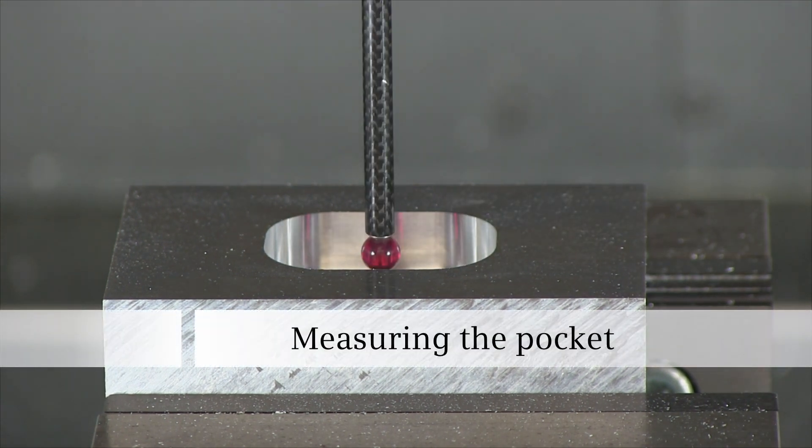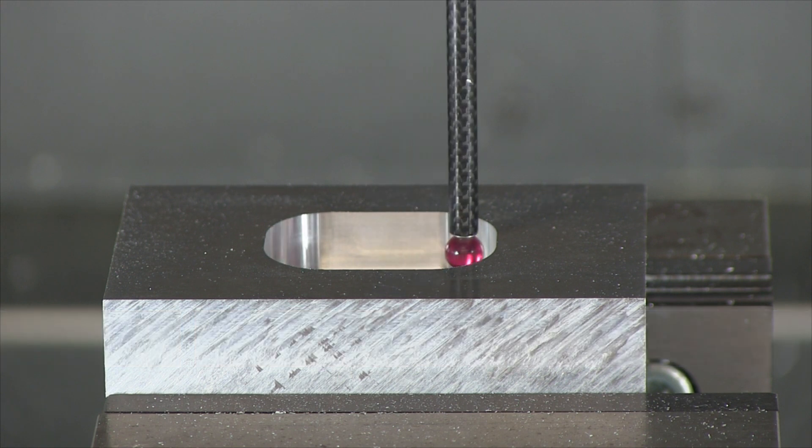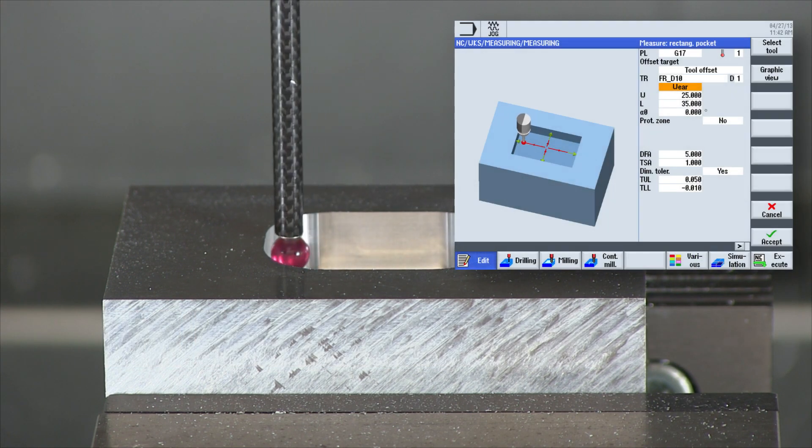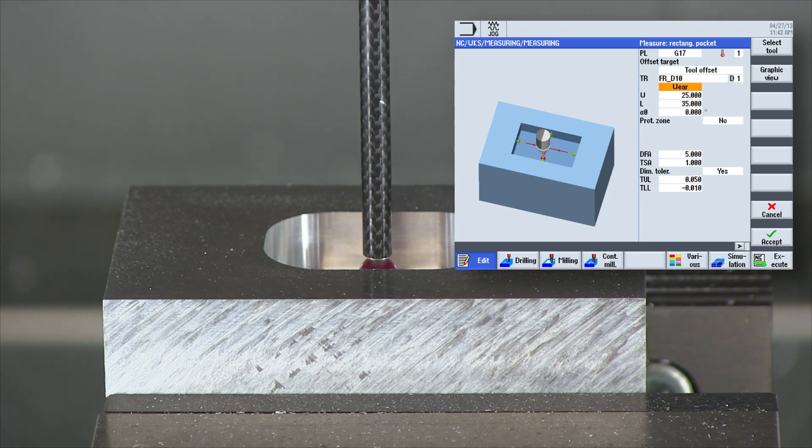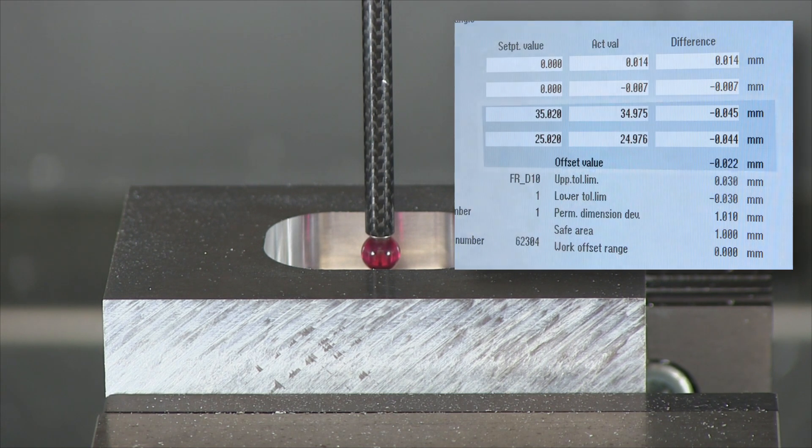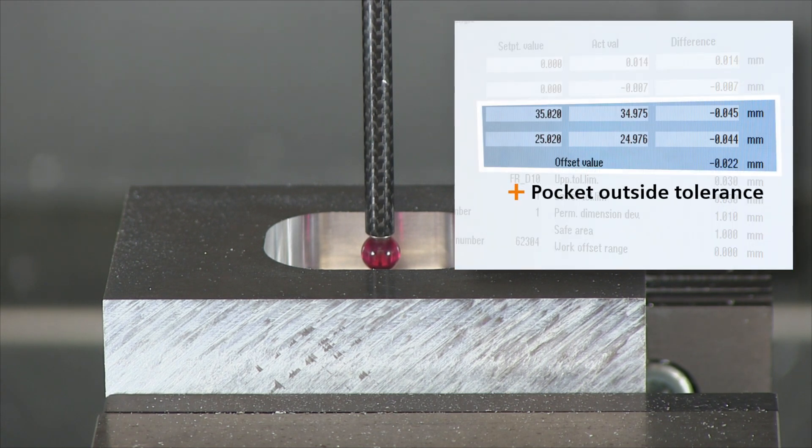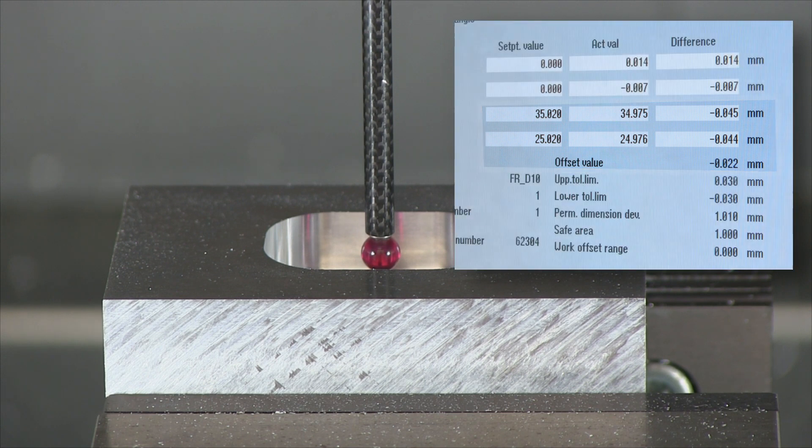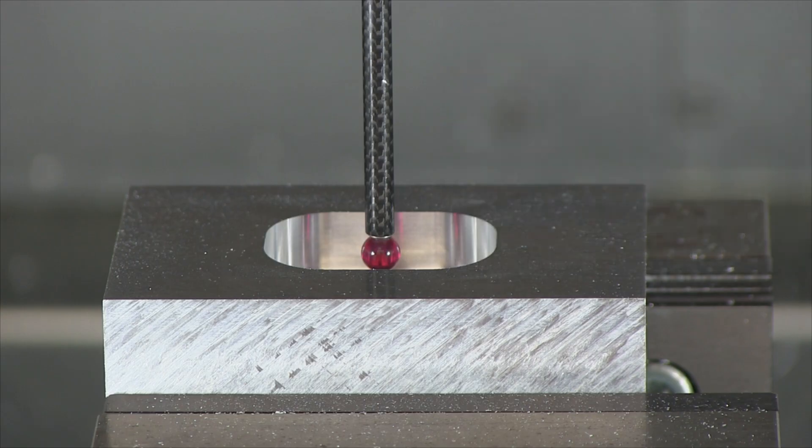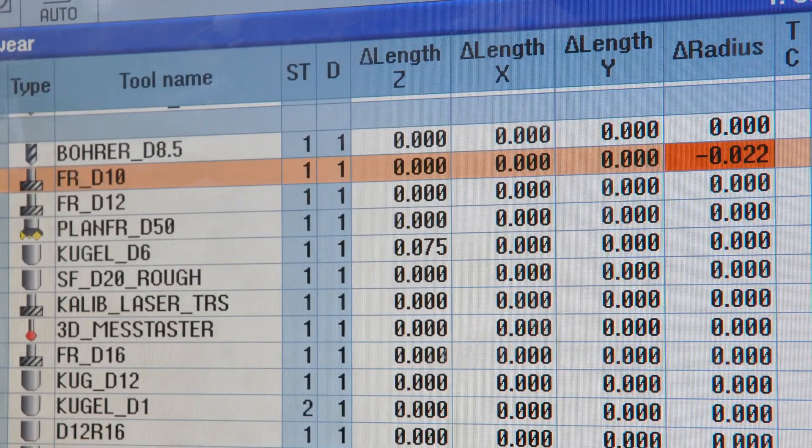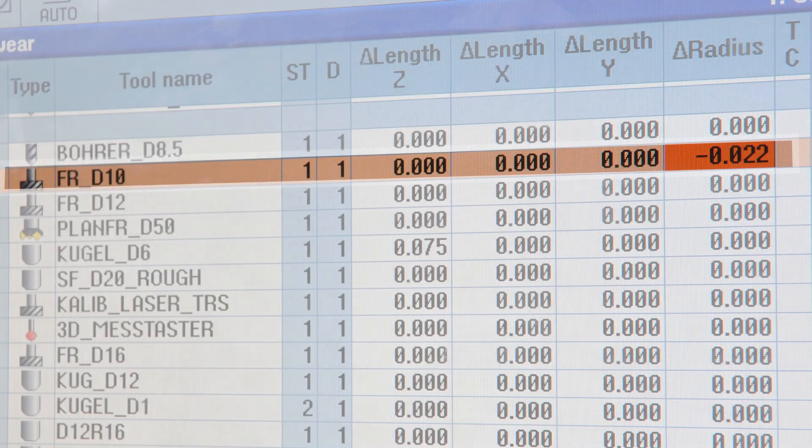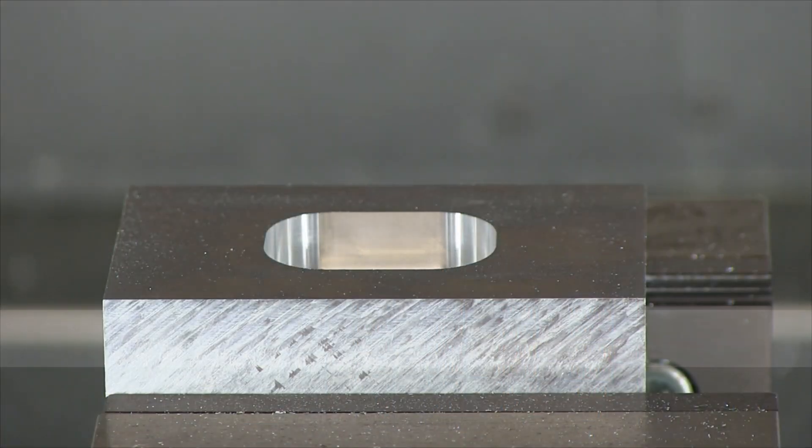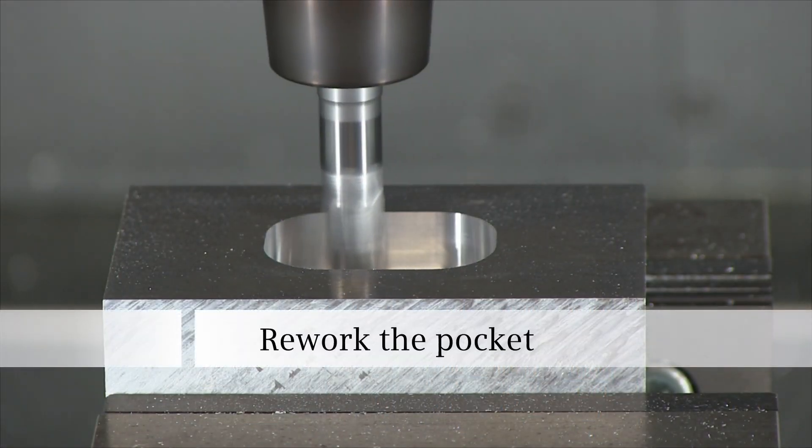The measurement cycle measure pocket is called up within the program and determines the measured values of the milled pocket. If the measurement values are outside tolerance and the pocket can no longer be reworked, the program is stopped. If the pocket dimension is small, the offset value is determined automatically and entered in the tool wear value. The pocket is reworked using the new offset values.